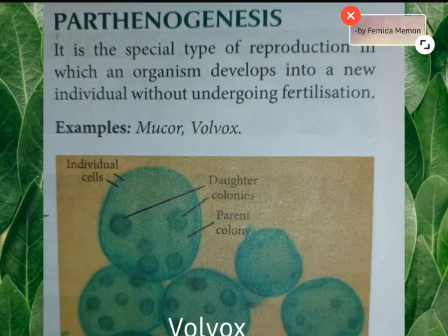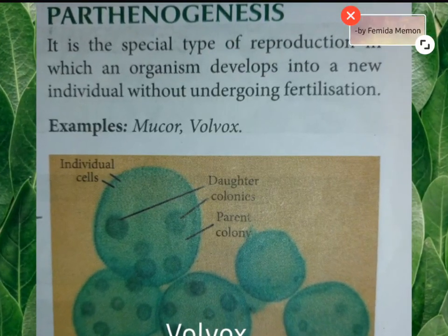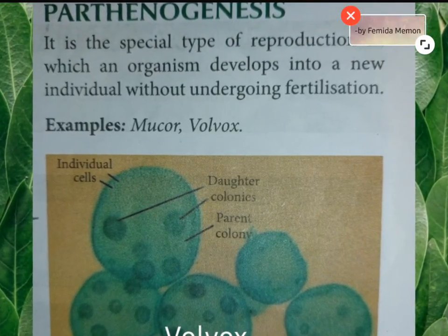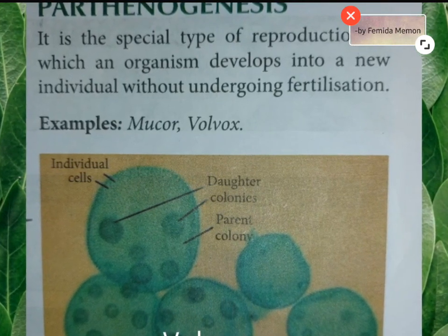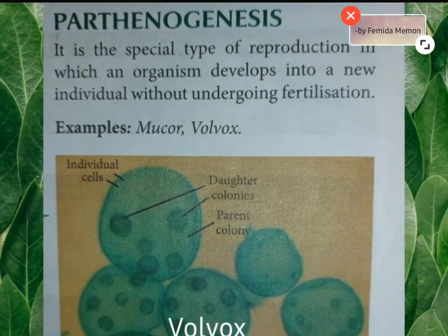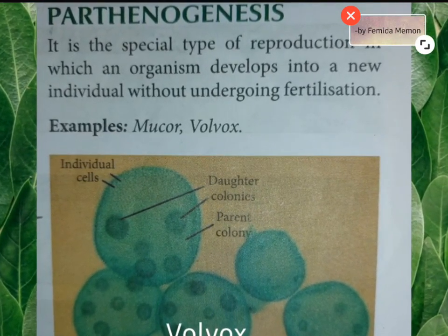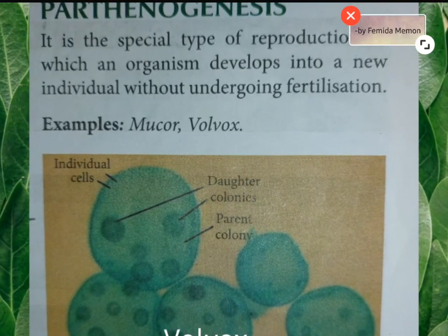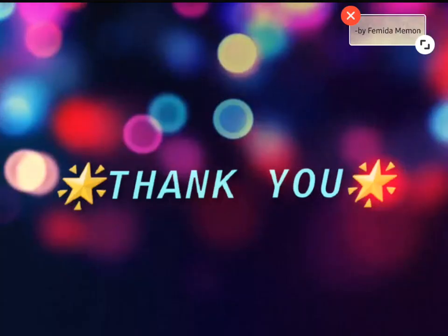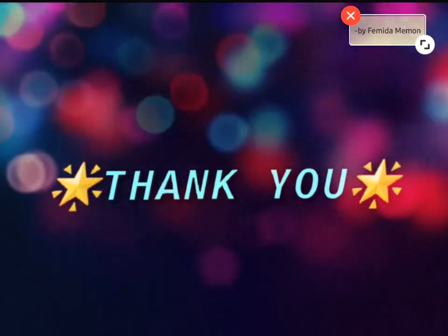Parthenogenesis: it is a special type of reproduction in which an organism develops into a new individual without undergoing fertilization. Example: Mucor. That's it, the chapter is completed. Thank you for watching.